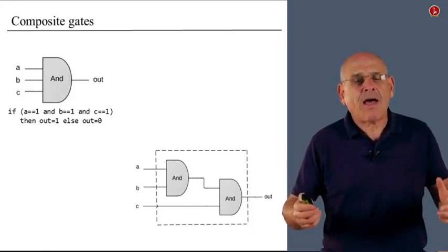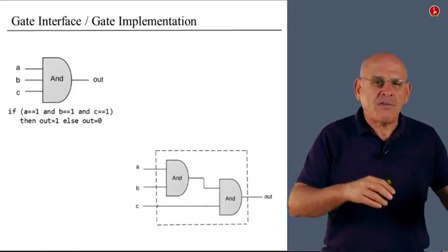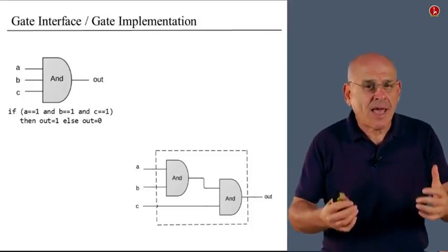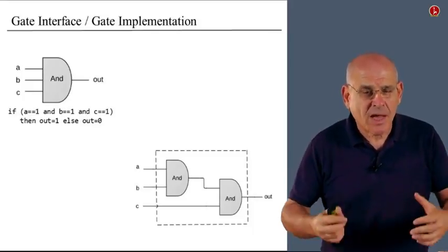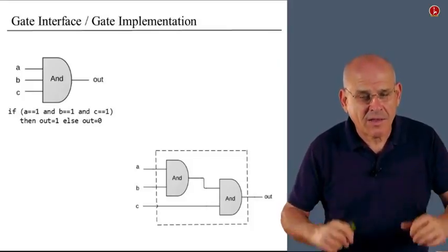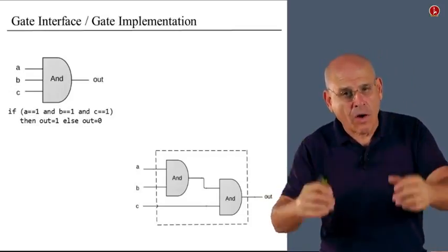So with that, I would like to say a few words about the notion of interface and implementation. The gate interface is the gate abstraction. This is how the user thinks about what the gate is supposed to do. Interface answers the question, what?